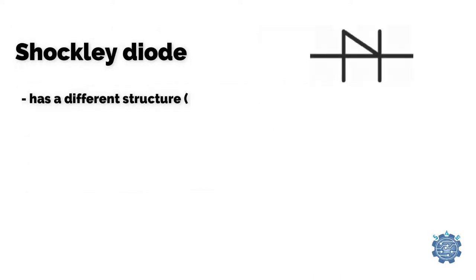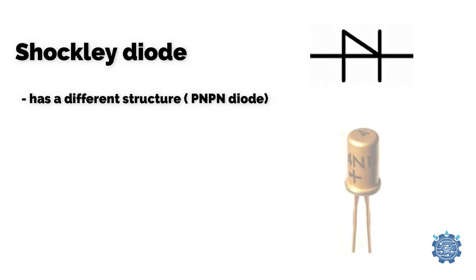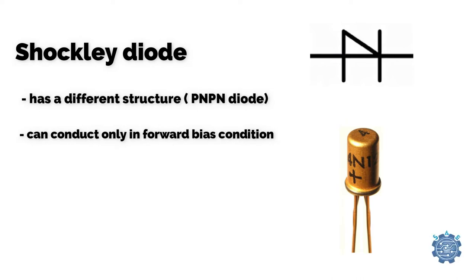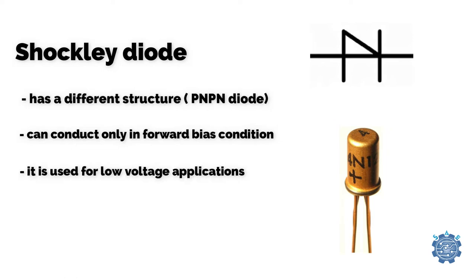Shockley Diode has a different structure. It is a PN-PN diode. This diode can conduct only in forward bias condition and if you turn it on it remains turned on, and the same situation is for the off state. It is used for low voltage applications.